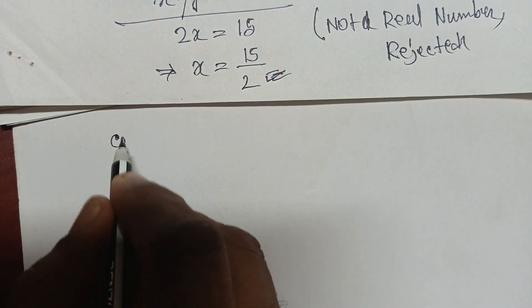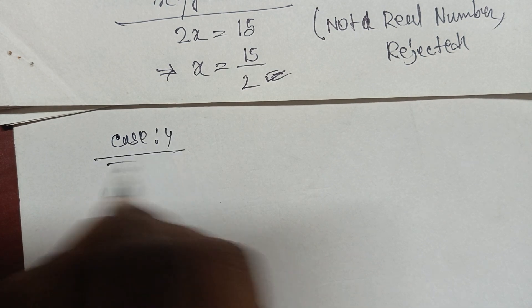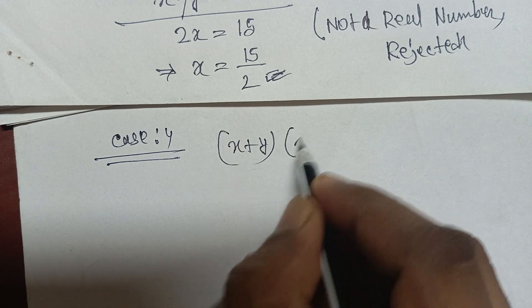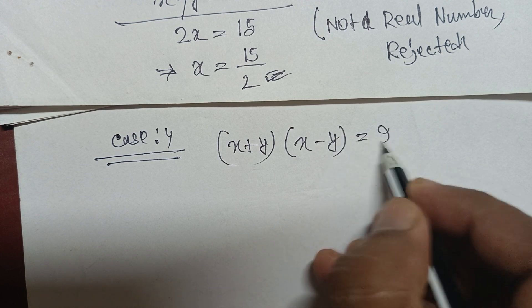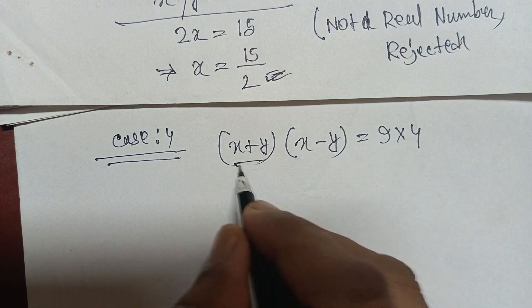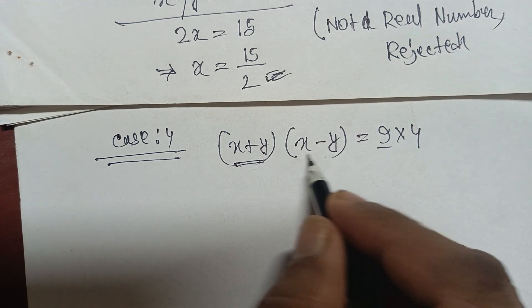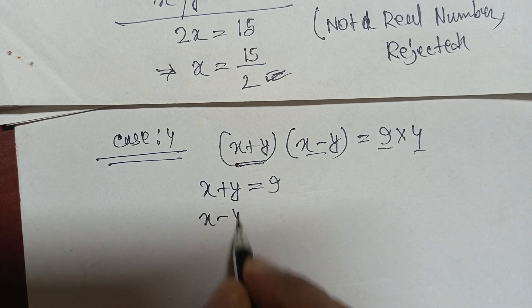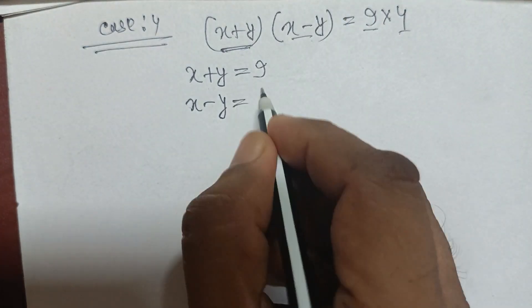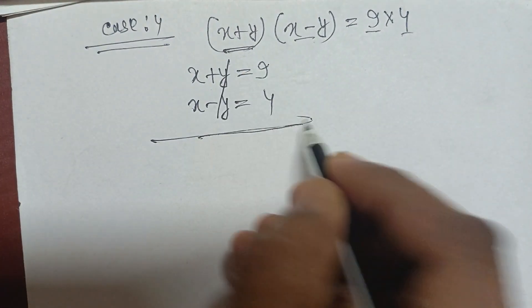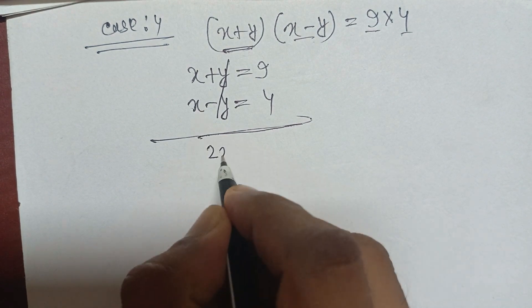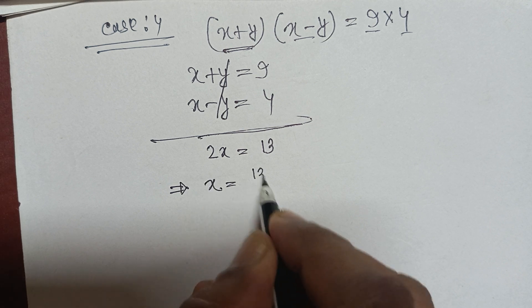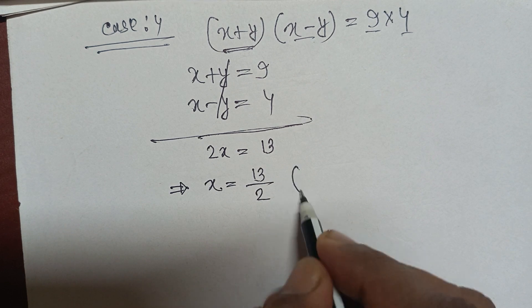For Case 4: x plus y equals 9 and x minus y equals 4. Adding these, we get 2x equals 13, so x equals 13 over 2. Again, this is not a natural number, so Case 4 is rejected.